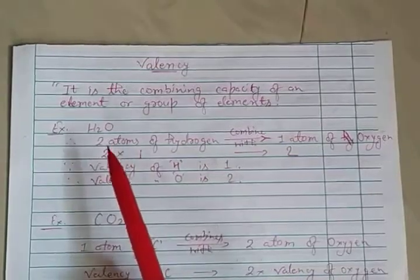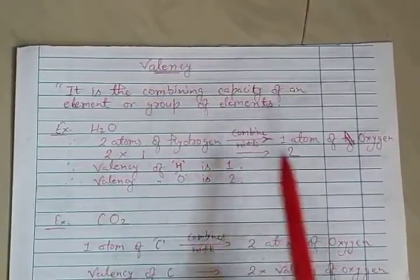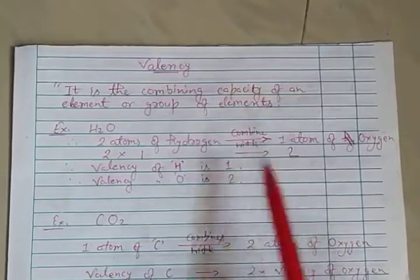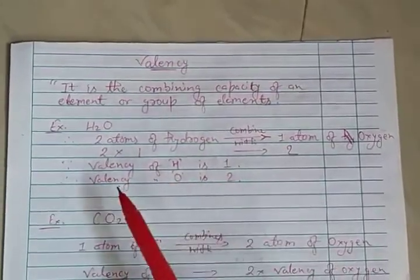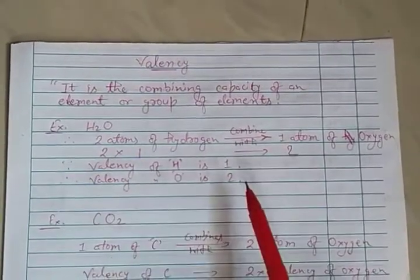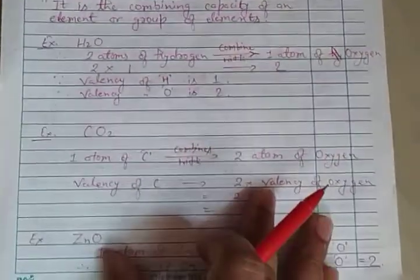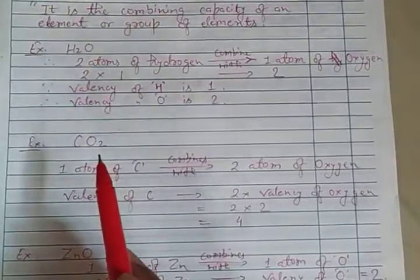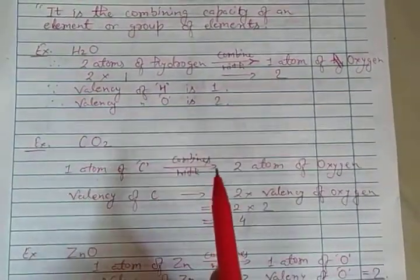So 2 atoms combine with 1: 2 into 1, so the valency of oxygen becomes 2. Valency of hydrogen is 1, valency of oxygen is 2. Now let's see one more example — carbon dioxide. Here, 1 atom of carbon is combining with 2 atoms of oxygen.